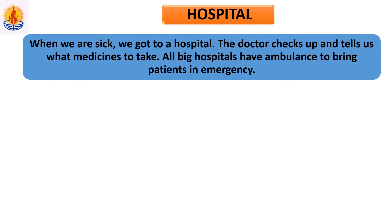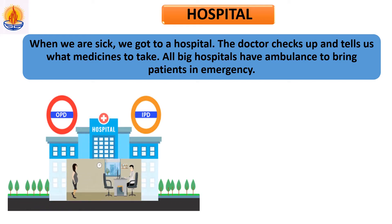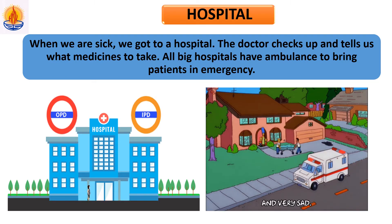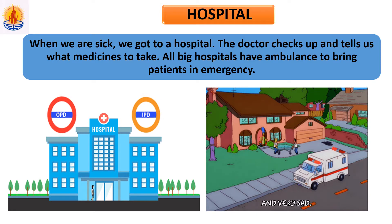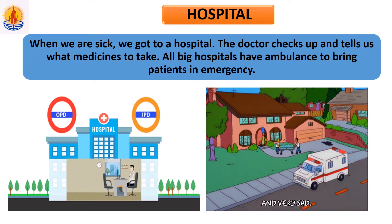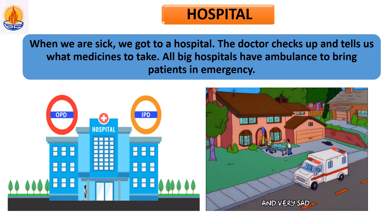We also have a hospital in our neighborhood. When we are sick, we go to a hospital. The doctor checks us and tells us what medicines to take. All big hospitals have an ambulance to bring patients in emergency. When we cannot go ourselves, everyone calls the ambulance and it takes us to the hospital. Every village has one hospital. You should go to a hospital only when you are sick.